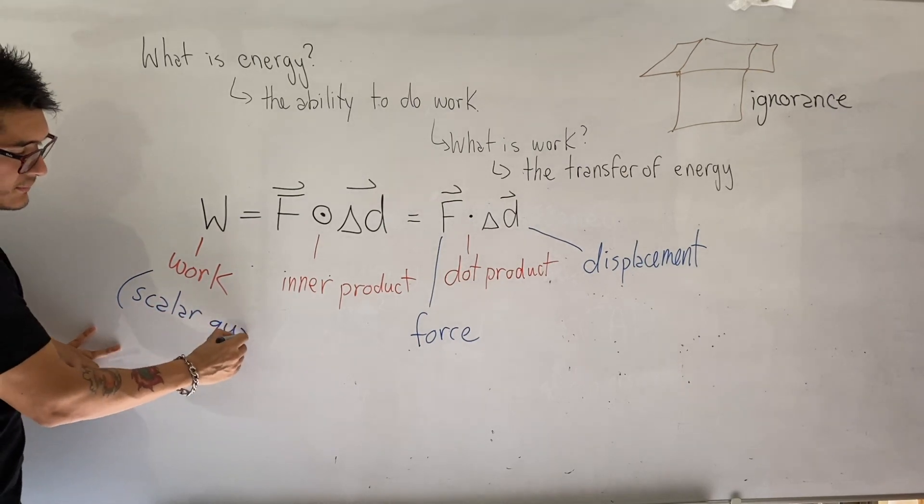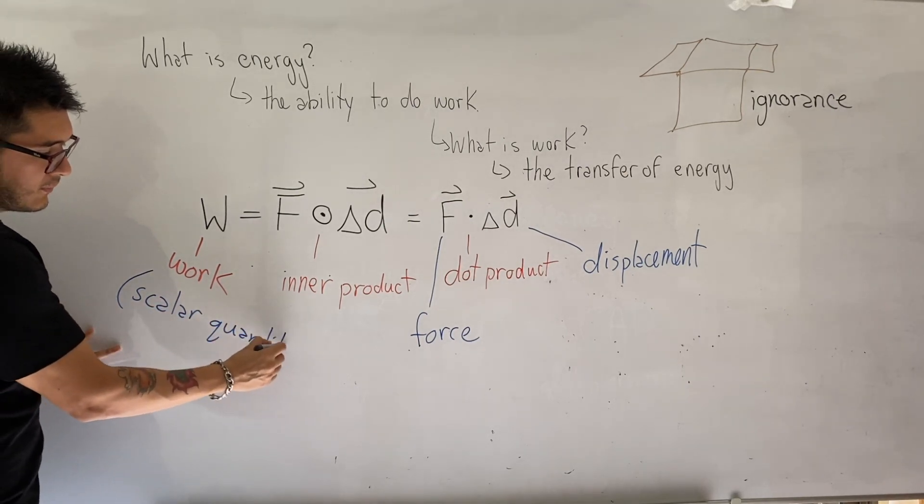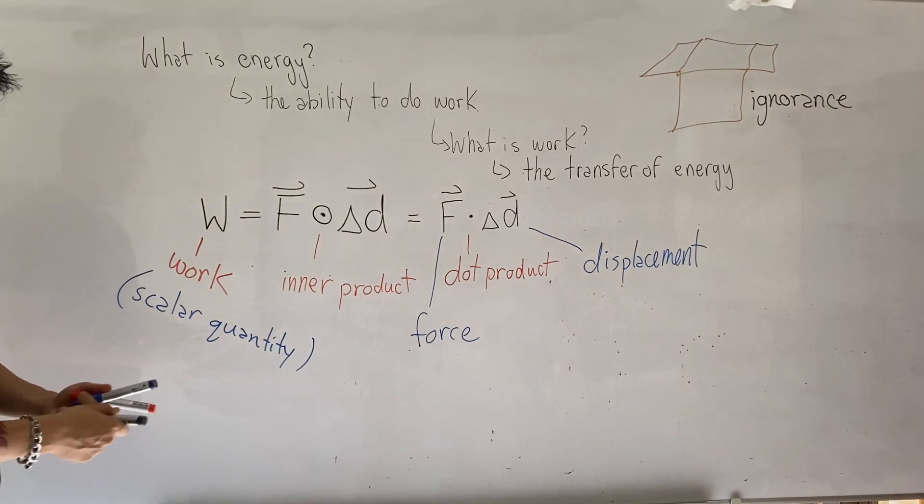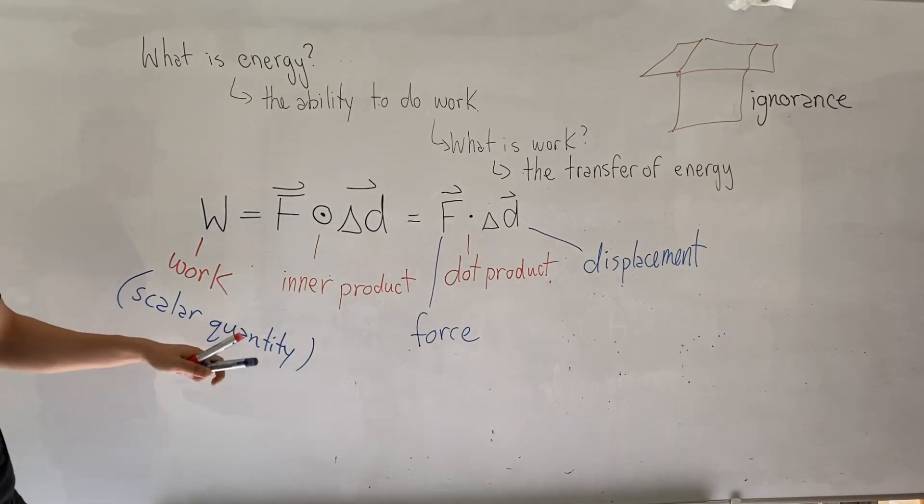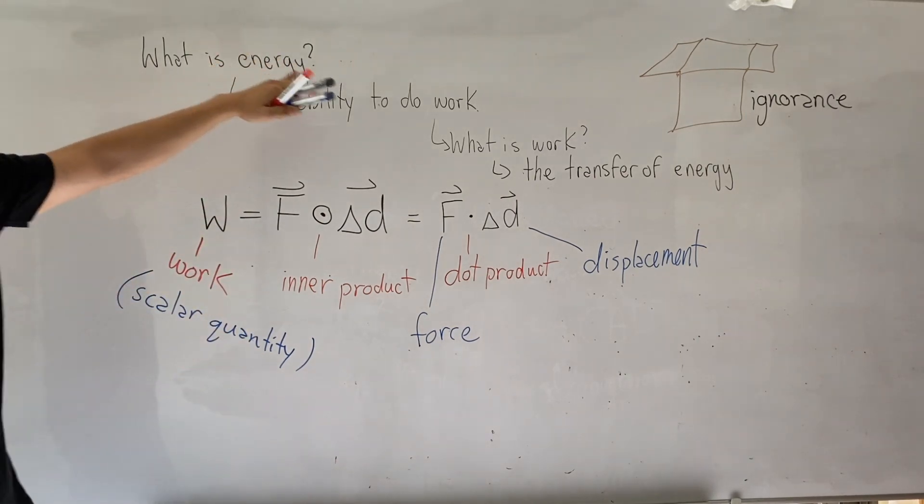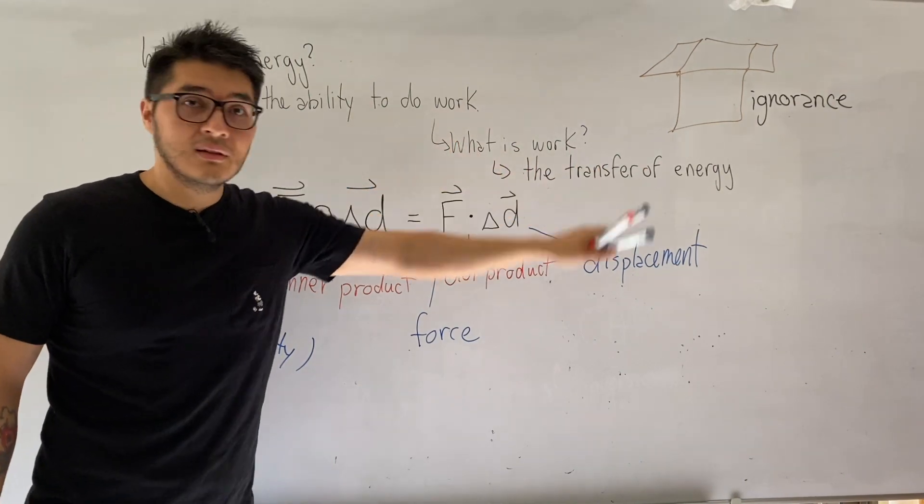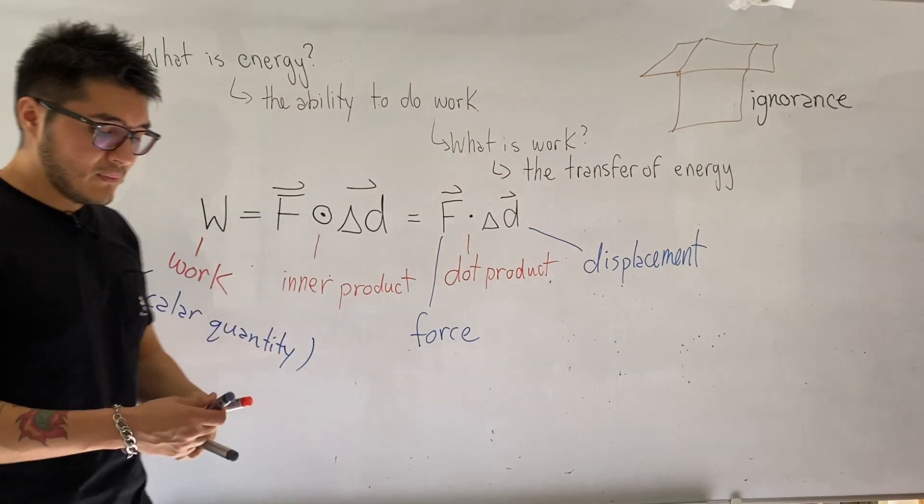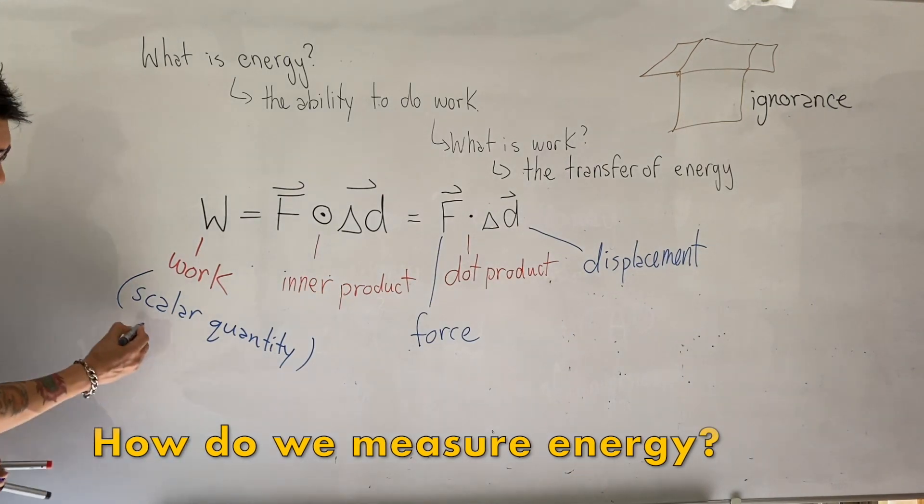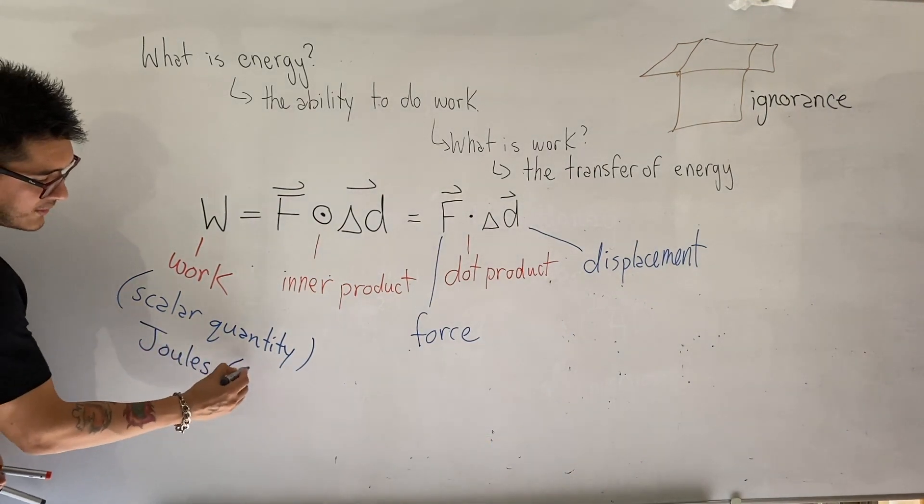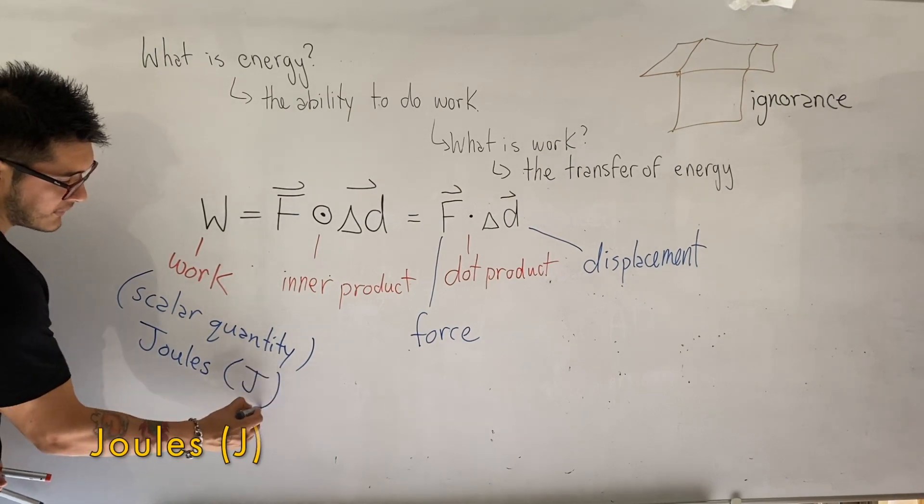In other words, it's not a vector, right? It's just a scalar quantity. The units that we use to measure work is going to be the same units that we use to measure energy, because these two are actually very much related. Work is a transfer of energy. How do we measure energy? In terms of joules. We use the capital letter J.